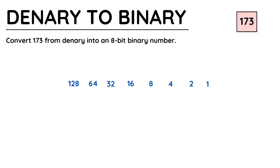Starting from the left with the MSB, which is the most significant bit — in an 8-bit number that is 128 — I check to see if it fits into my denary number. If it does fit I write 1; if it doesn't go into the number because it's too large I write 0. 128 does go into 173, so I write 1 beneath the 128.